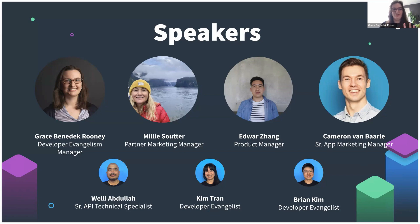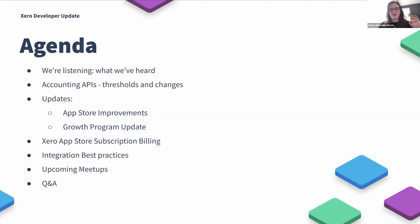I did pop a little poll on here: what is your favorite season? I can see that summer has won by a mile, which is good. I'm sure there's plenty of New Zealanders like myself who are looking forward to summer. Let's hop into the agenda. We're going to be talking about pre-submitted questions, updates around the accounting APIs and thresholds, App Store and growth program updates from Cam and Millie, new resources for App Store subscriptions, new best practice guides, and we'll wrap it up with Q&A at the end.